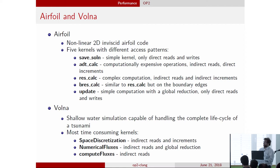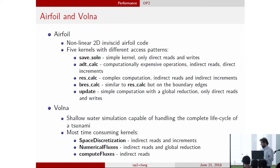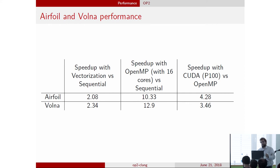To show the performance achievable with this method and how the skeletons generalize, there are two applications: the airfoil code and a shallow water simulation. Both are representative of unstructured mesh applications because they have the most important access patterns we have to deal with in these types of applications. With OP2 Clang we can generate vectorized versions of the application as well as parallelized versions for OpenMP and for CUDA.